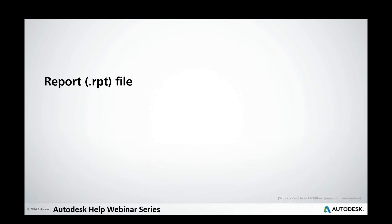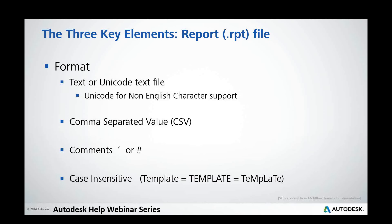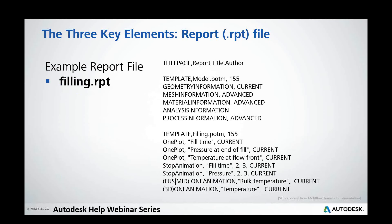The last of the three key components is the report RPT file. It only uses a standard text or Unicode text file. Comma-separated values are used to separate fields, apostrophe or hash are used for comments, and the text is not case-sensitive. This is an example of the filling RPT file — one of the standard reports located in your install directory. At first glance it may seem confusing, but Paul will show you how simple it is through his demonstration.